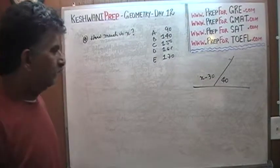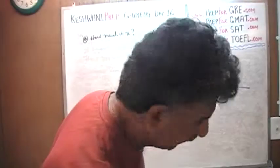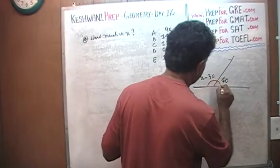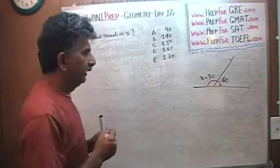There we go. So what do we do here? Well we know that a straight line makes 180 degrees. This is a straight line. Right here. Straight line which is half a circle makes 180 degrees.